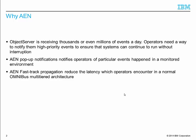So why do we need AN? Omnibus can handle millions of events a day, with all events being treated with equal importance. Operators need a way to notify them of high priority events to ensure that the system can continue to run without interruption.